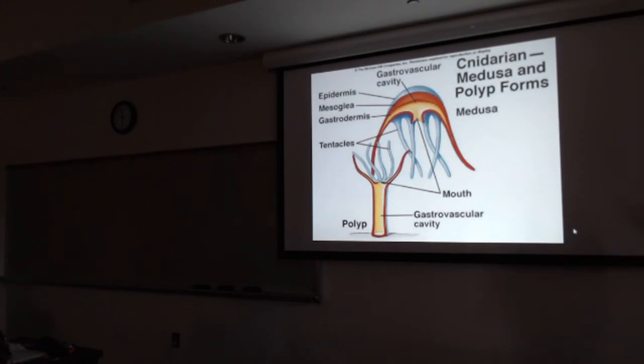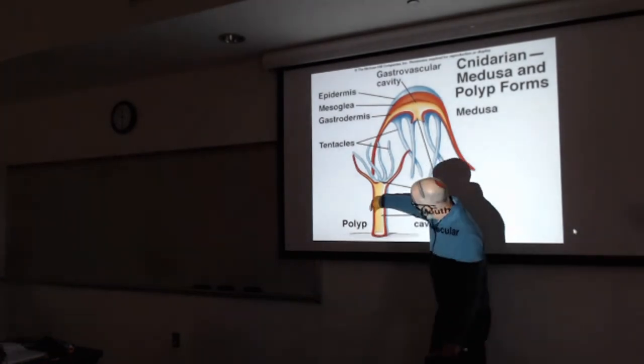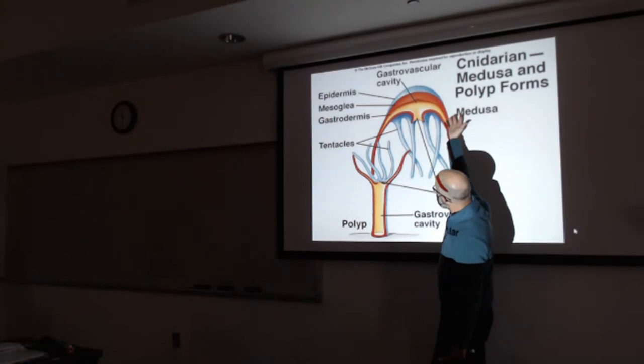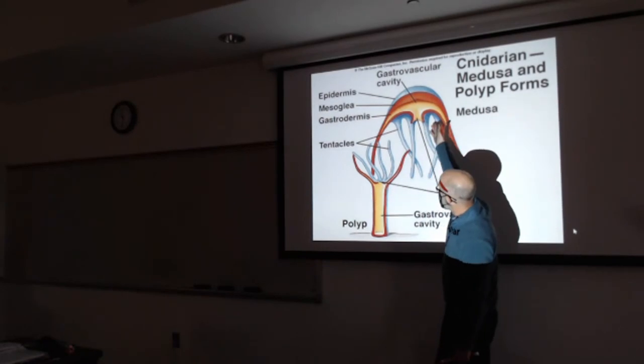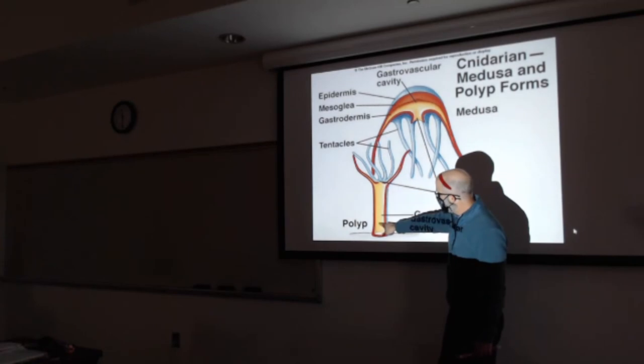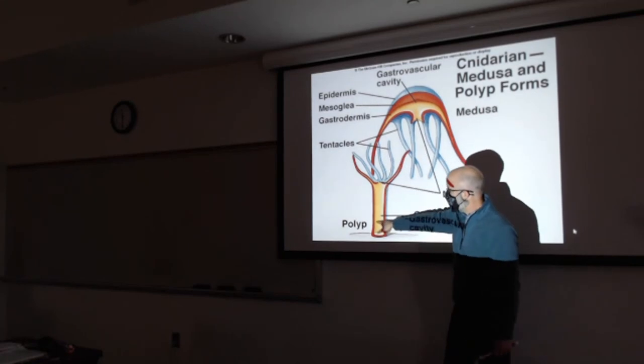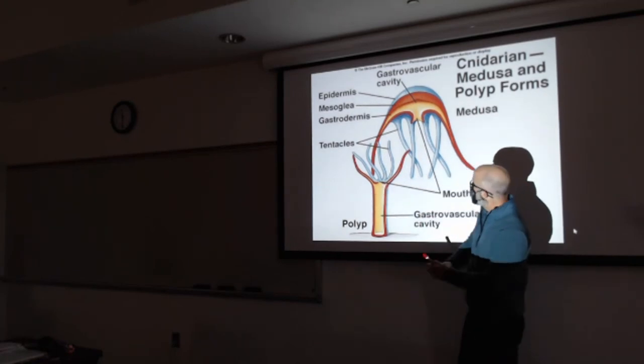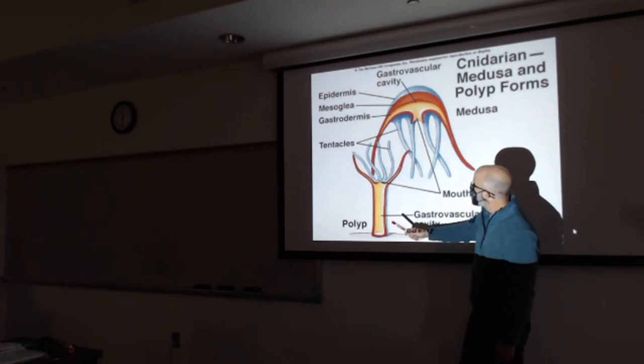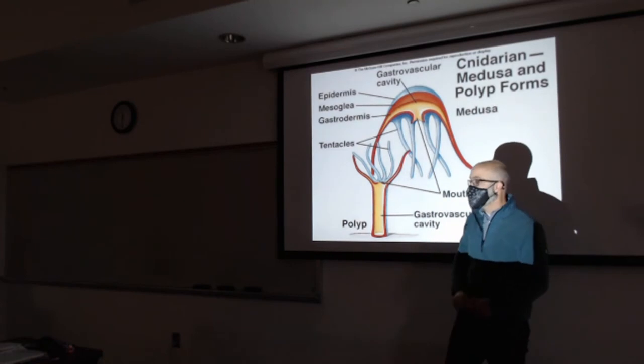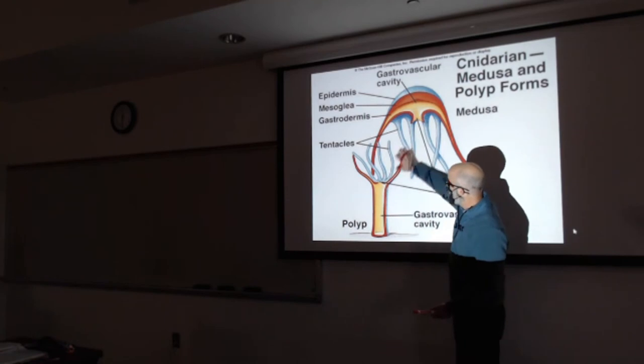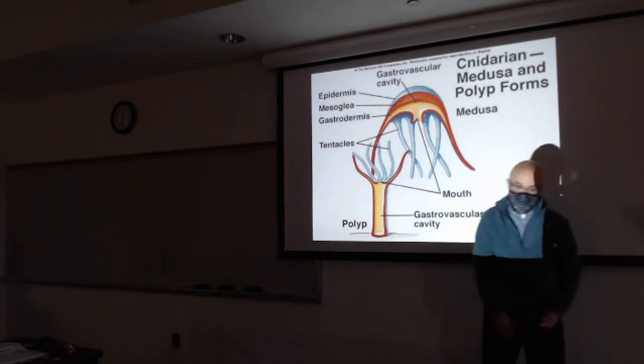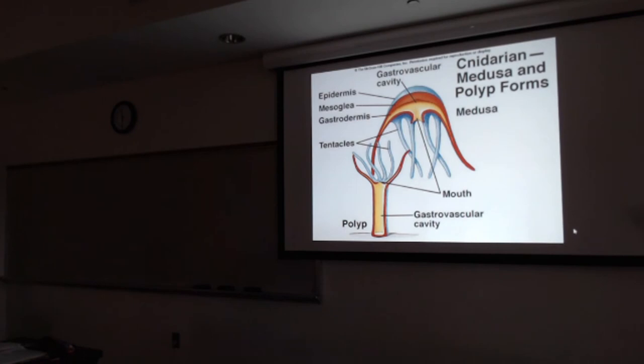Here's a polyp. You see attached, sessile, thin mesoglea. Medusa. It's basically take this, flip it over, and it's planktonic. They both have a single opening and the area for digestion and excretion. They have a lot of tentacles. So a lot of similarity, but asexual, sexual, sessile, planktonic, thin mesoglea, thick mesoglea.